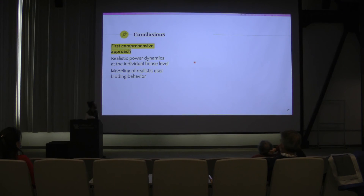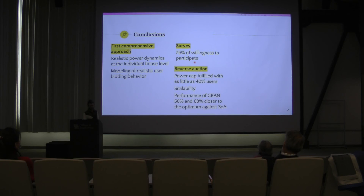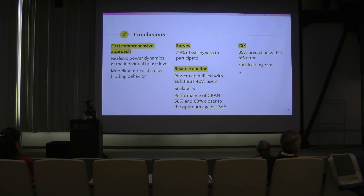In conclusion, we present the first comprehensive approach to power conservation that uses realistic power dynamics of individual households. We use individual and realistic user bidding behavior, showing that 79% of users would be willing to participate. This highly exceeds the minimum percentage of participants needed in our experiments, which is 40%. We show how our approach scales, and demonstrate that our approach performs 88% and 68% closer to the optimum compared to the baseline. Our machine learning model achieves 85% of predictions within 5% error with a very fast learning rate.